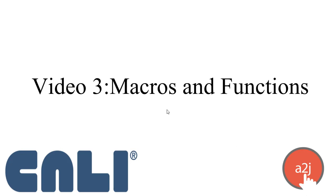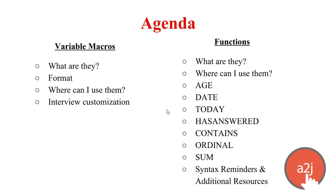This is video three. We'll cover macros and functions. The agenda today is broken up into two parts. The first part will cover variable macros — what they are, the format, where you can use them, and how you can customize your A2J guided interviews with them. The second part will cover functions: what functions are, where you can use them, specifically the age, date, today, has answered, contains, ordinal, and sum functions, and syntax reminders and additional resources.